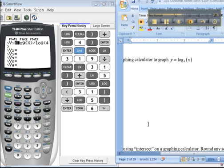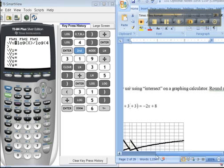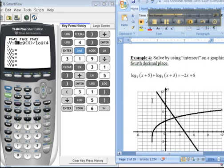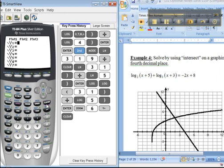Next thing they want us to do is use intersect on a calculator to find when log base 2 of x plus 5 plus log base 3 of x plus 3 is equal to this. All right. So, let's start with the first one.